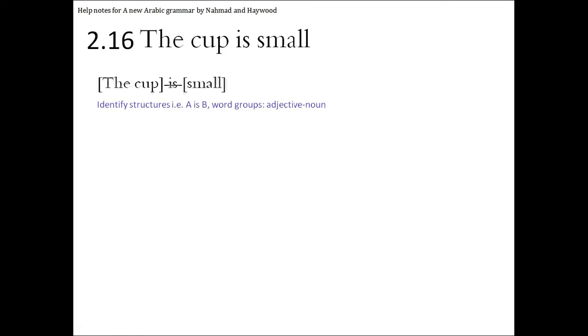The cup is small, question 16. First let's look at the structure of the sentence. We can identify there is an is in this sentence, so there's something is something, i.e. it's an A is B, al-juml-al-ismi, kind of sentence. So let's look at the words before the is. We can group them together as just one word, cup.